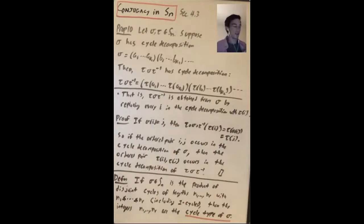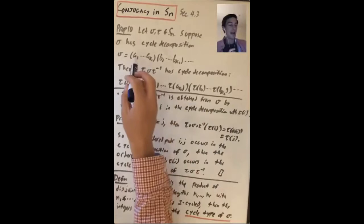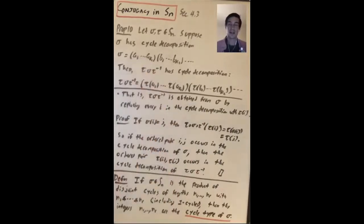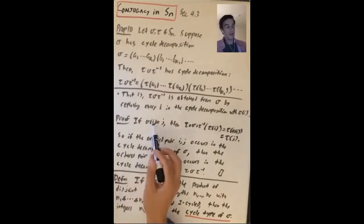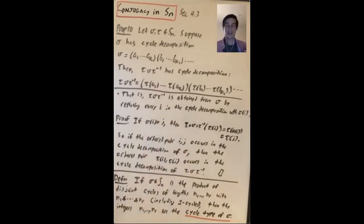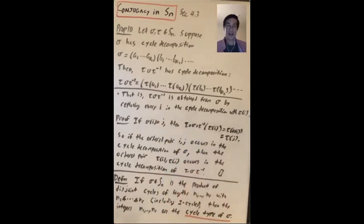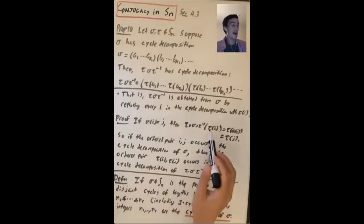The proof is not difficult. The idea is to see what happens to two consecutive integers in the cycle decomposition of σ. So if σ(i) = j, that means in the cycle decomposition of σ we have an i followed by a j.